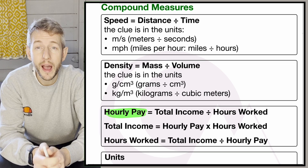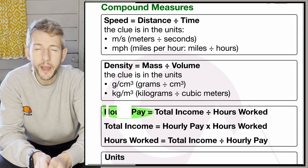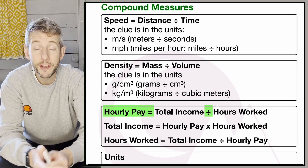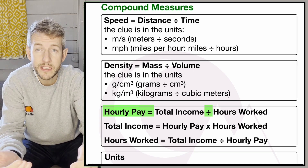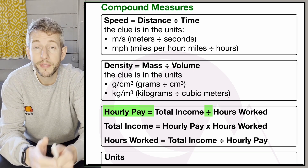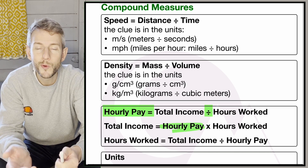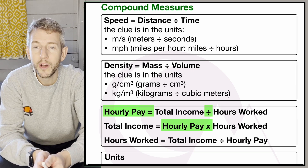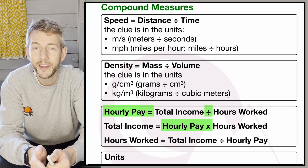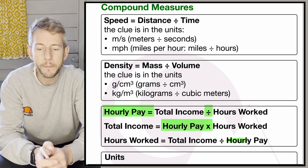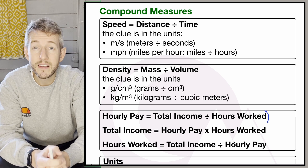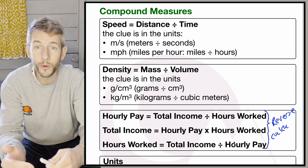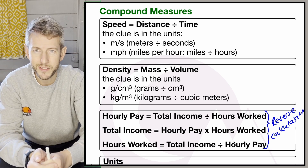For hourly pay: hourly pay equals total income divided by hours worked. Rearranging, total income equals hourly pay times hours worked, and hours worked equals total income divided by hourly pay. These three are examples of reverse calculations, which are often asked for in your functional skills test so you can check your answers.